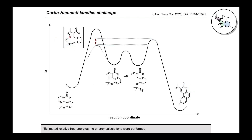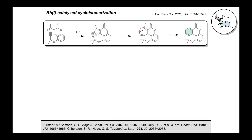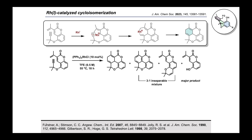To overturn the innate Curtin-Hammett reactivity, we postulated that a transition metal catalyst could template the diene and dienophile, enabling an alternative and more favorable mechanism for formation of the dearomatized 1,4-cyclohexadiene product. While there are many examples of metal-catalyzed [4+2] cycloisomerizations, vinyl coumarin dienes, dearomatization, and Curtin-Hammett kinetics challenges are novel to this research area. We hypothesized that low-valent rhodium, which can react with dienes to form metallacyclopentene intermediates that can then undergo alkyne insertion, would be ideal for our substrate.